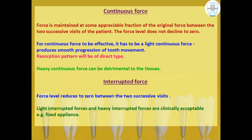Continuous force is maintained at some appreciable fraction of the original force between two successive patient visits — the force level never reaches zero. For example, if force is applied at 10, it stays at 7 until the next visit, then is restored to 10. For continuous force to be effective, it must be light, as this produces smooth progression of tooth movement with a frontal or direct resorption pattern. Heavy continuous forces can be detrimental to the tissues.